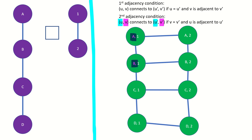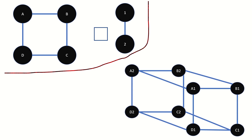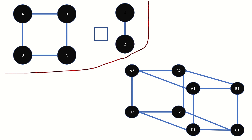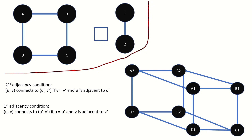All done! This is the Cartesian product of a path graph of four vertices and a path graph of two vertices. Notice how the Cartesian product is really two path graphs of four vertices linked together — two copies linked is the pattern that arises when we take the product with a path graph of length 2. If we take the product of a cycle graph of four vertices with a path graph of two vertices, we get a prism. This is because the second adjacency rule creates two copies, and those copies are linked together by the first adjacency rule. Each vertex on the right graph copies the left graph via the second adjacency rule, and the adjacencies in the right graph tell us how to connect those copies through the first adjacency rule.